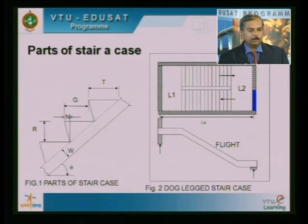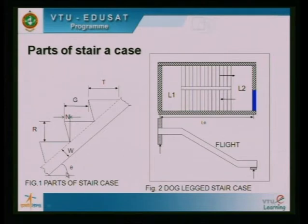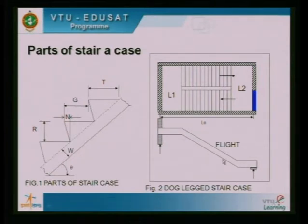Let us see some of the important parts of the staircase before going to the different types. I have taken the example of a dog-legged staircase. This is how the staircase looks in plan, and this is what the flight — the flight is inclined at some angle. This is what the landing or the landing slab. The flight is also a slab — a flight slab — and again another landing slab.